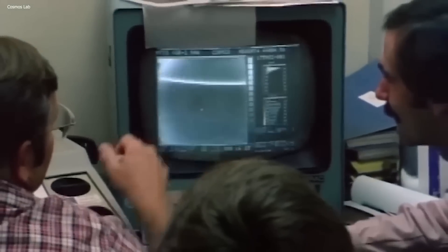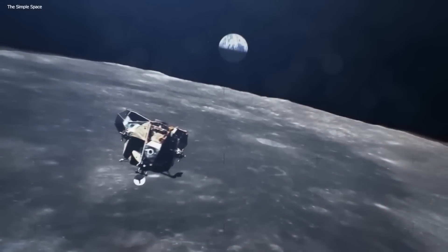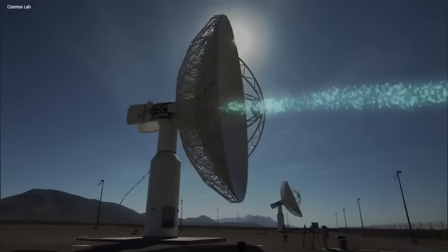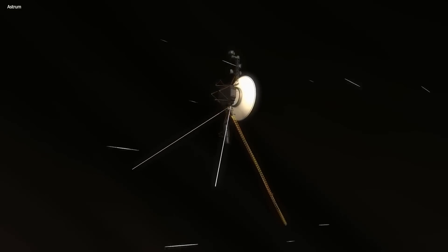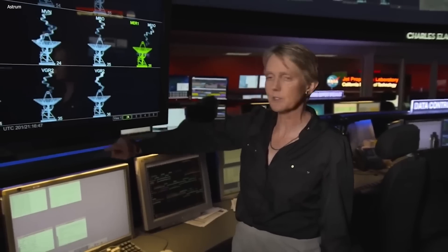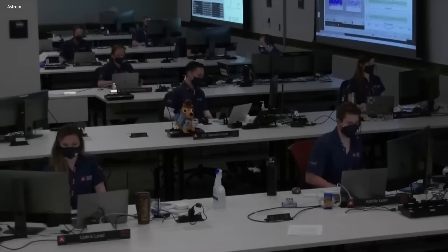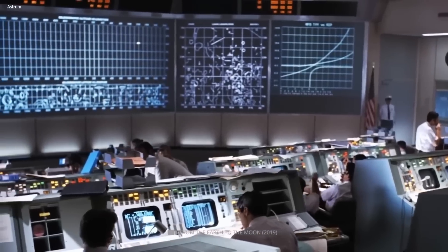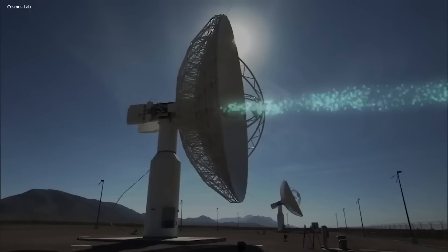Moreover, the vast distance between Voyager 1 and Earth poses a significant challenge to maintaining effective communication. The spacecraft's signal strength has weakened considerably, with signals now taking over 21 hours to travel from Voyager 1 to Earth. Weak signals combined with background noise interference create obstacles for reliable data transmission and reception.